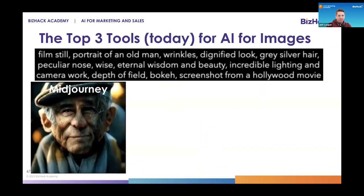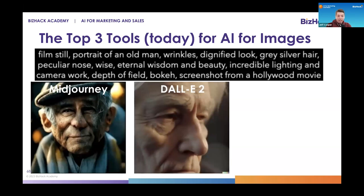In the current state of the market there are essentially three tools — and this is an example from each one. We asked for a very detailed, complex prompt and asked it to produce a picture of an older gentleman that could be from a movie. Midjourney is a tool created by a company called Midjourney — it is only a paid tool, costing about $15 or $20 a month. The second tool that's very popular right now is DALL-E, from the same company that produces ChatGPT. OpenAI has a second product called DALL-E, and DALL-E 2 is the version that does image generation.